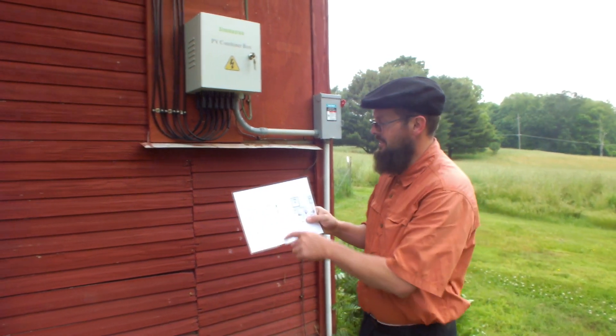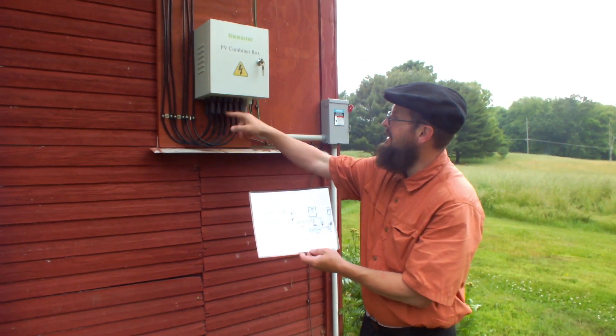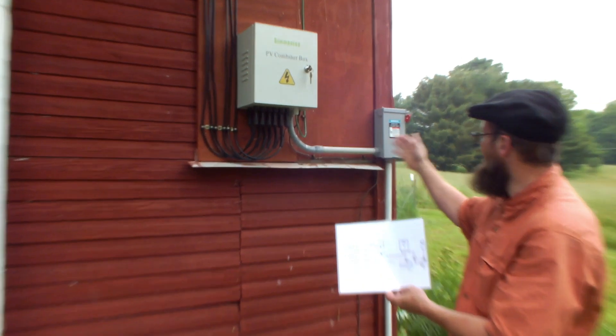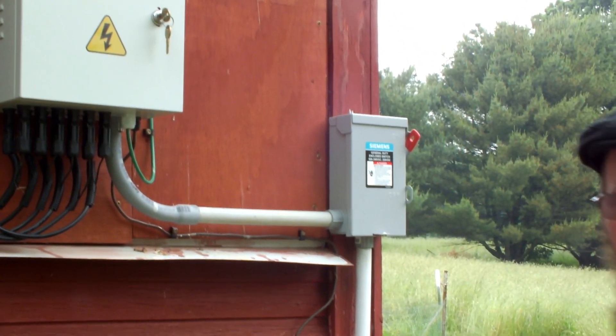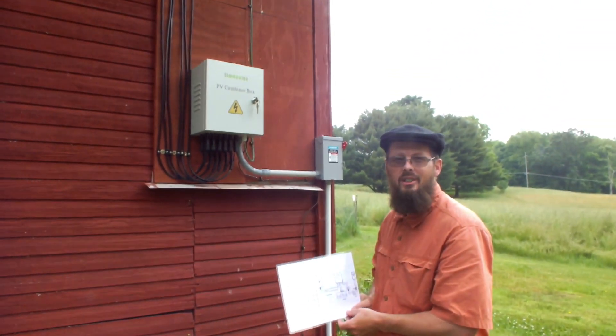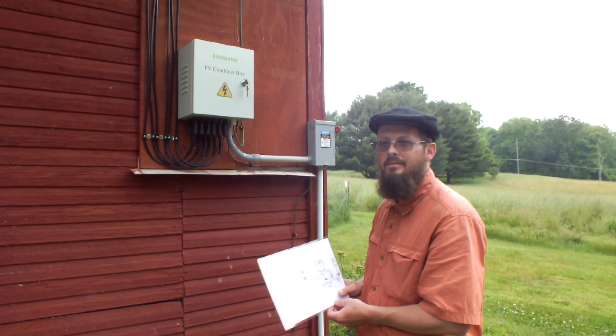Here, as you can see, we have six strings coming in, and this combiner box right here goes to the fire disconnect. Also tags one ground rod. It's a 30 amp array so I don't see a need for two. We'll look inside.